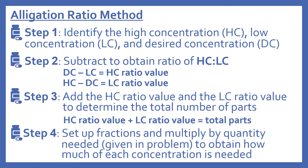First we'll look at the allegation ratio method. Step one: we're going to identify the high concentration, which I'll refer to as HC, the low concentration or LC, and the desired concentration, which I call DC.